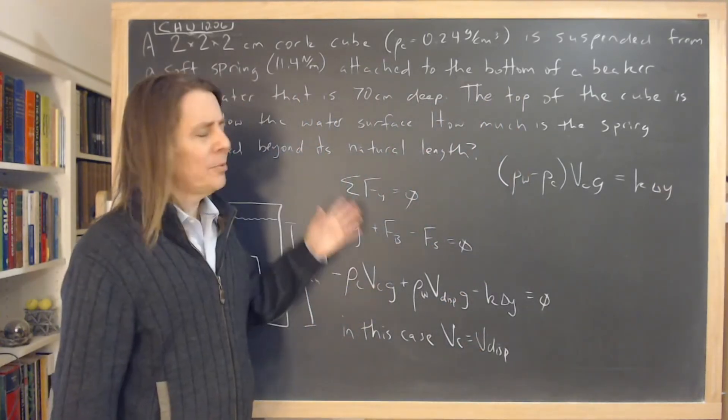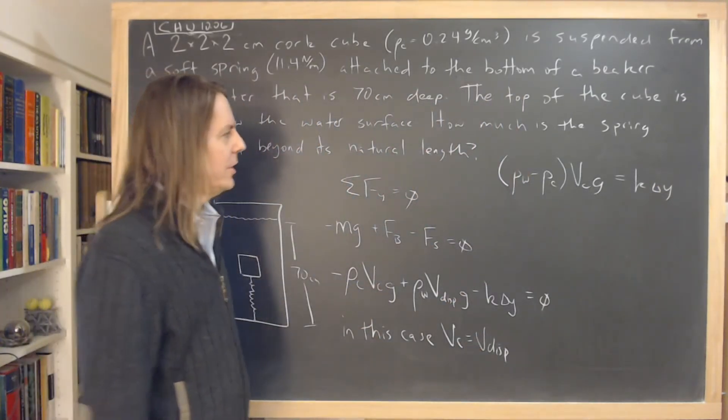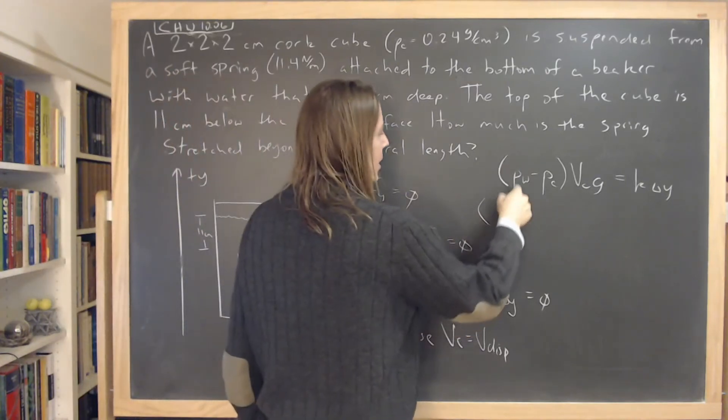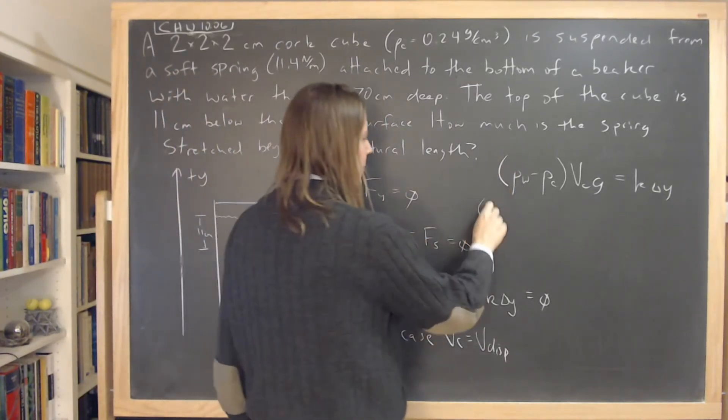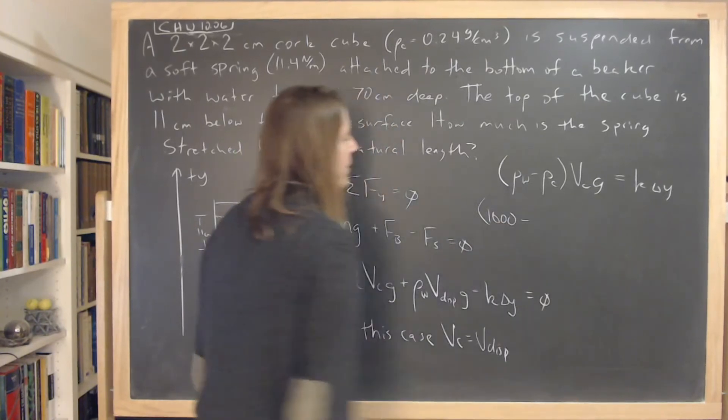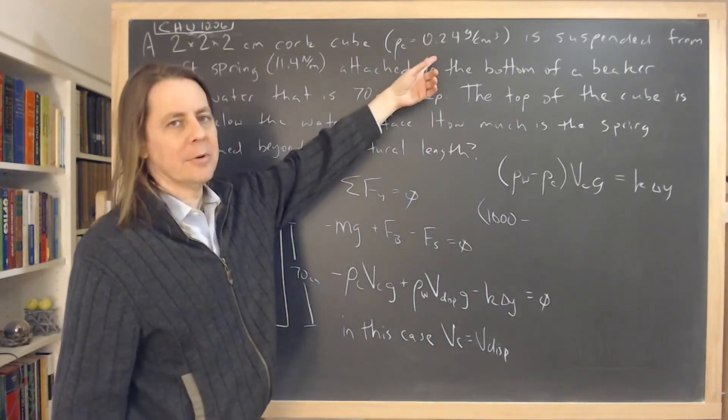Okay. I'm just trying to simplify the algebra a little bit. It's not really necessary. Now we can start plugging in numbers. The density of water, I'm going to do the whole thing in mks units, is a thousand. The density of cork, convert that to mks units, 240.